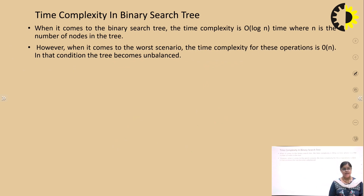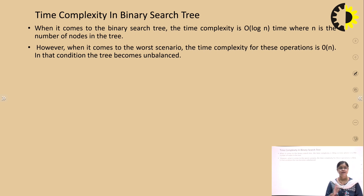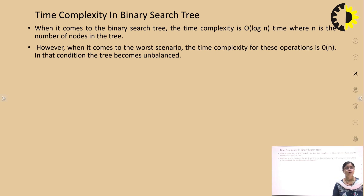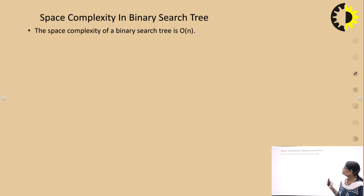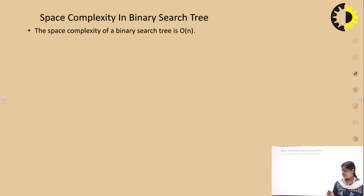The time complexity of a binary search tree: when the tree is balanced — meaning it is labeled and balanced left and right — its time complexity is O(log n). But when it is unbalanced, its time complexity is O(n). The space complexity is O(n).